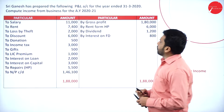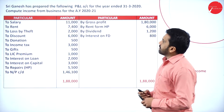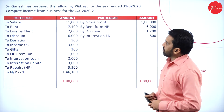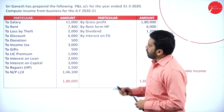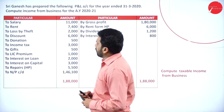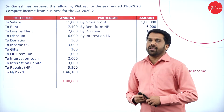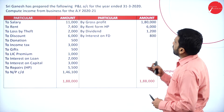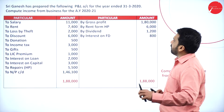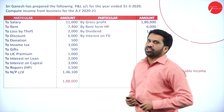In this, we have particular amounts on both sides. On the debit side: salary, rent, loss by theft, discount, donation, income tax, gift, LIC premium, interest on loan, interest on capital, repairs, and net profit carried down. On the credit side: gross profit, rent, dividend, and interest on FD.